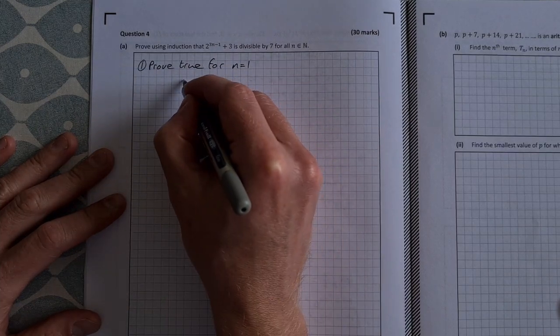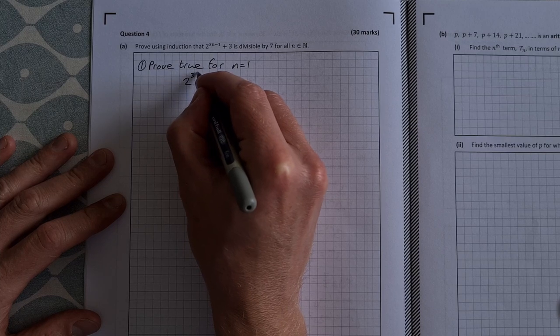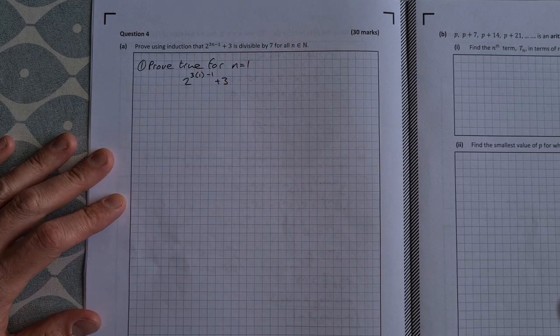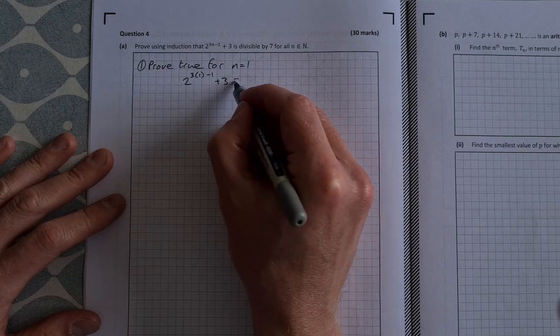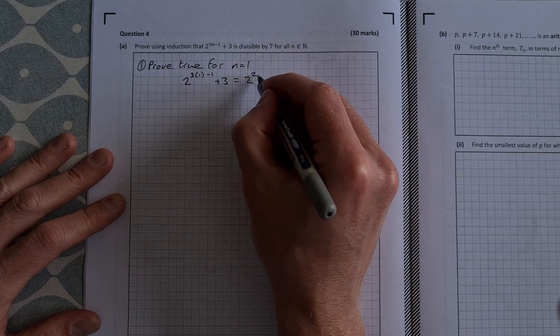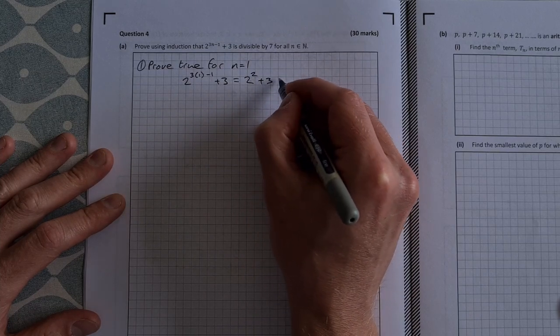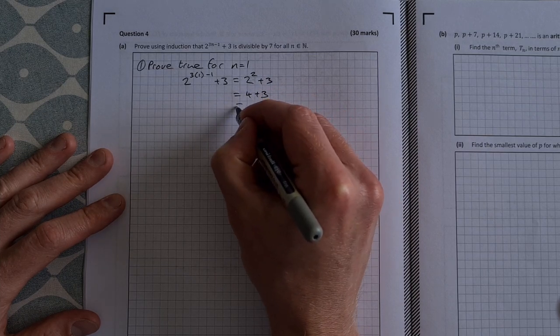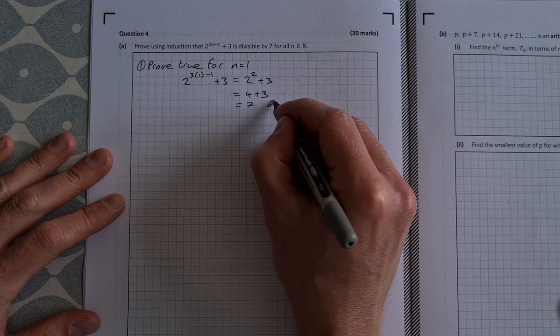So that means we have 2 to the power of 3 times 1 minus 1 plus 3 and we check is that divisible by 7. So that's equal to 2 to the power of 3 minus 1 is 2 so that's 2 squared plus 3 which is equal to 4 plus 3 which is equal to 7 which is divisible by 7.